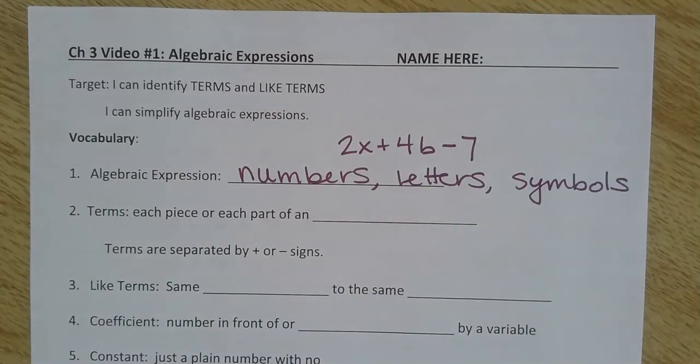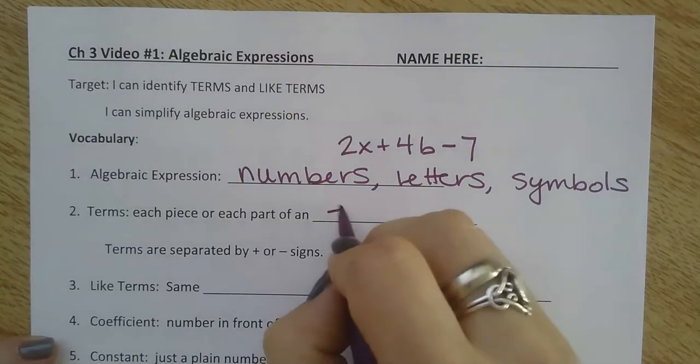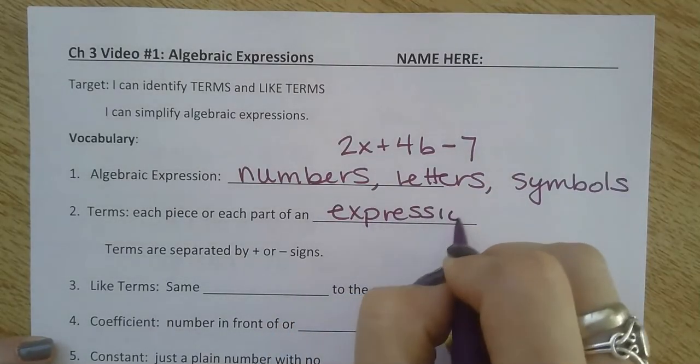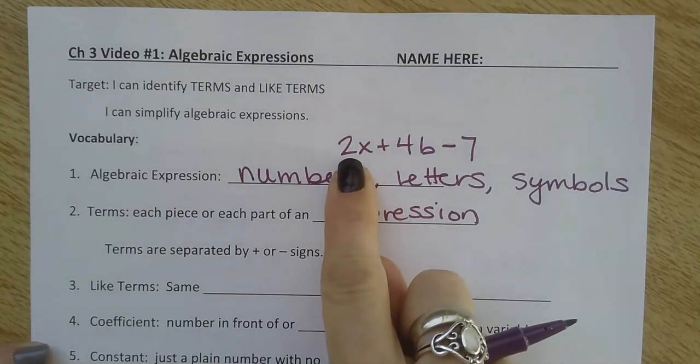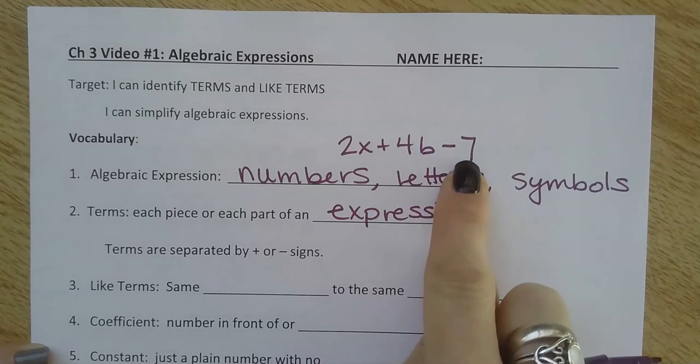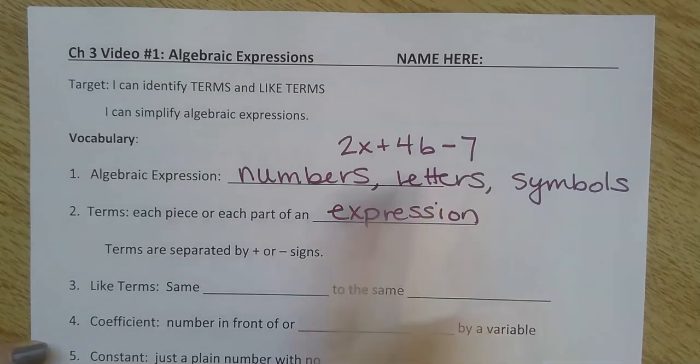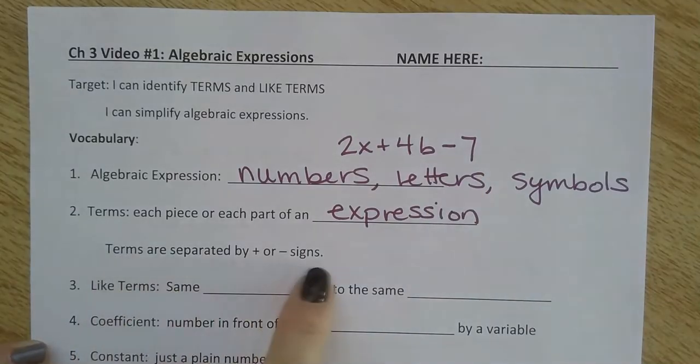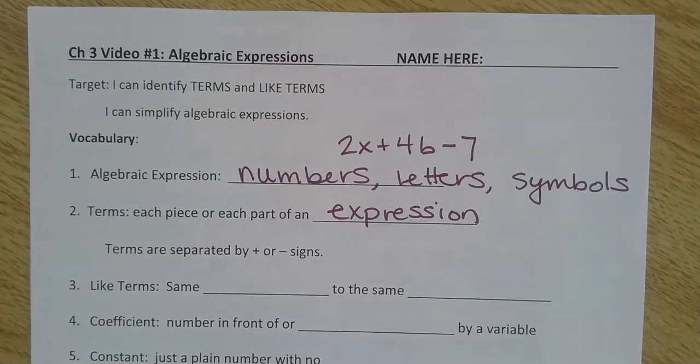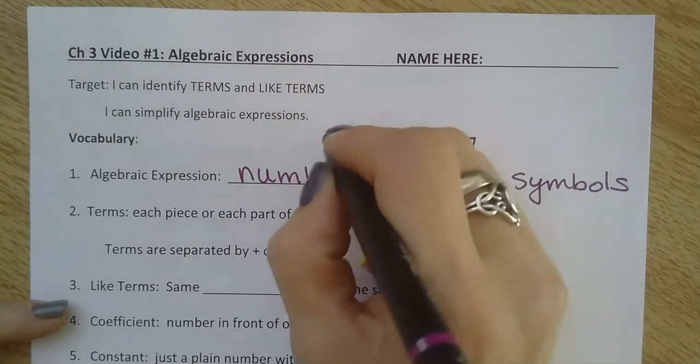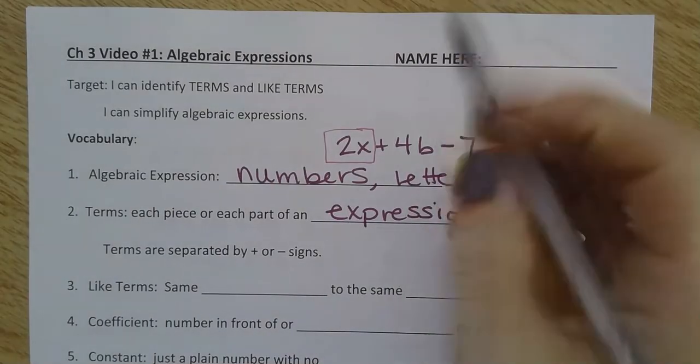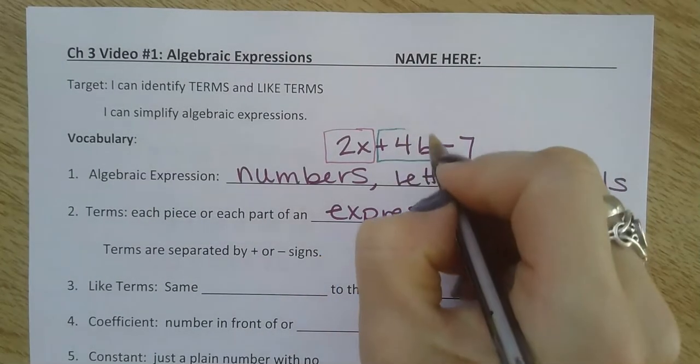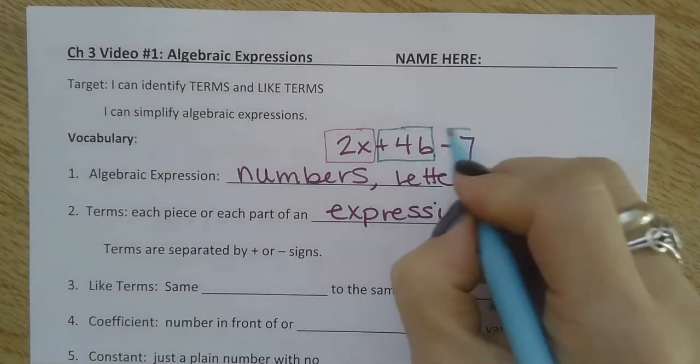Terms - each piece or each part of an expression. For example, I have three terms here: 2x, 4b, and negative 7. So I have three terms in my algebraic expression in this example. The terms are separated by the plus or minus signs.